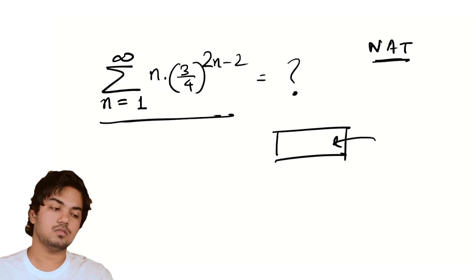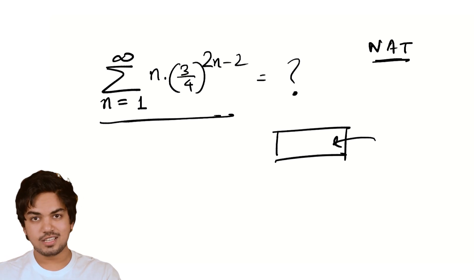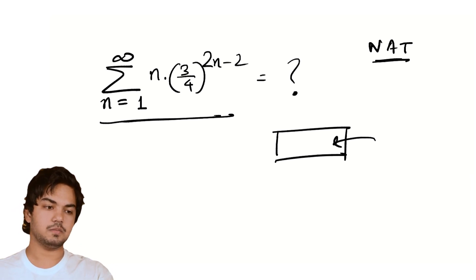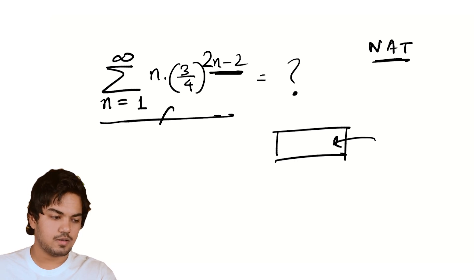Pause the video and try it on your own. It's a very nice problem. There's a cheeky trick that happens here and I will immediately introduce you to it, but I will get into power series after this. I'll develop the theory and come back to the problem. The main thing you want to notice here is that this 2n minus 2 is kind of a wash. A much better way of writing this is n into 9/16 to the power n minus 1.